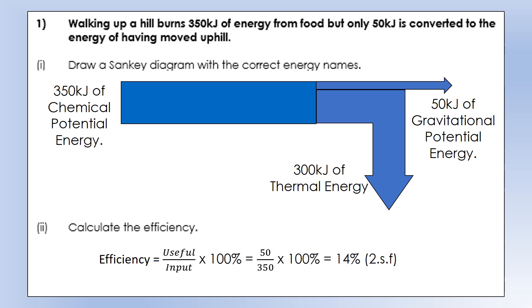The first thing to figure out is what the energy transfer is. We're starting with food, so chemical potential energy, and we're going up a hill, so the useful energy transfer is gravitational potential energy. In terms of wasted energy, once we get to the top, we're going to have lost lots of energy to the surroundings in the form of thermal energy.